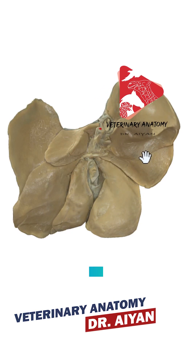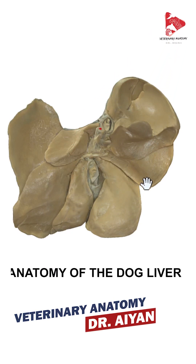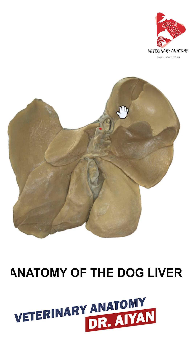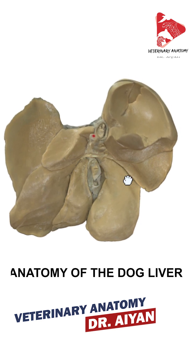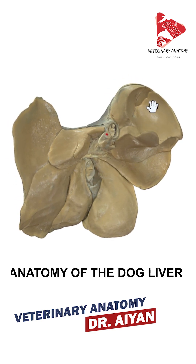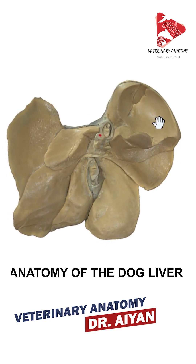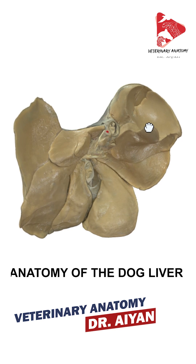Hello everyone and welcome to another anatomy video. After we watched the previous video talking about the anatomy of the cat liver, now we will talk about the anatomy of the dog liver. To identify the different parts of the liver, you firstly have to find the impression of the right kidney. Look at this picture — it's a 3D model — the impression is very clearly located in this area.